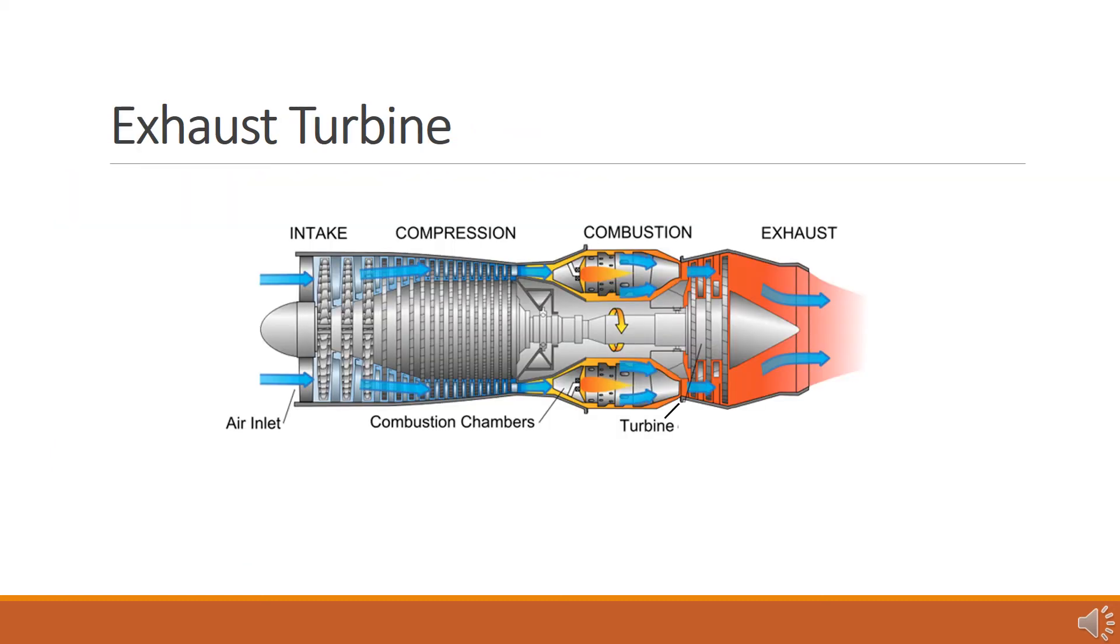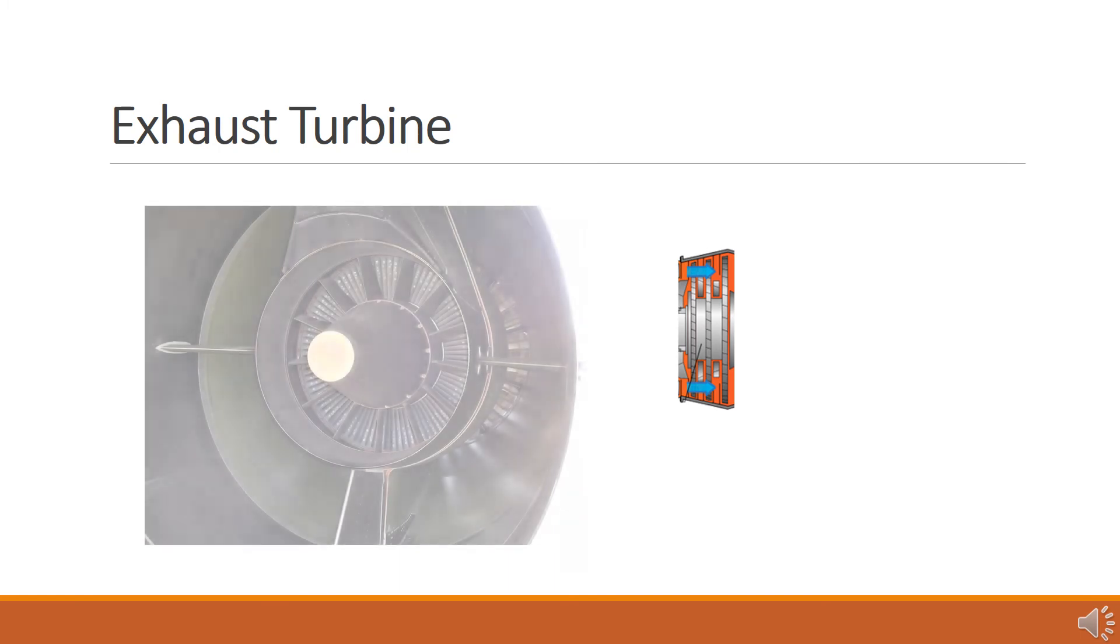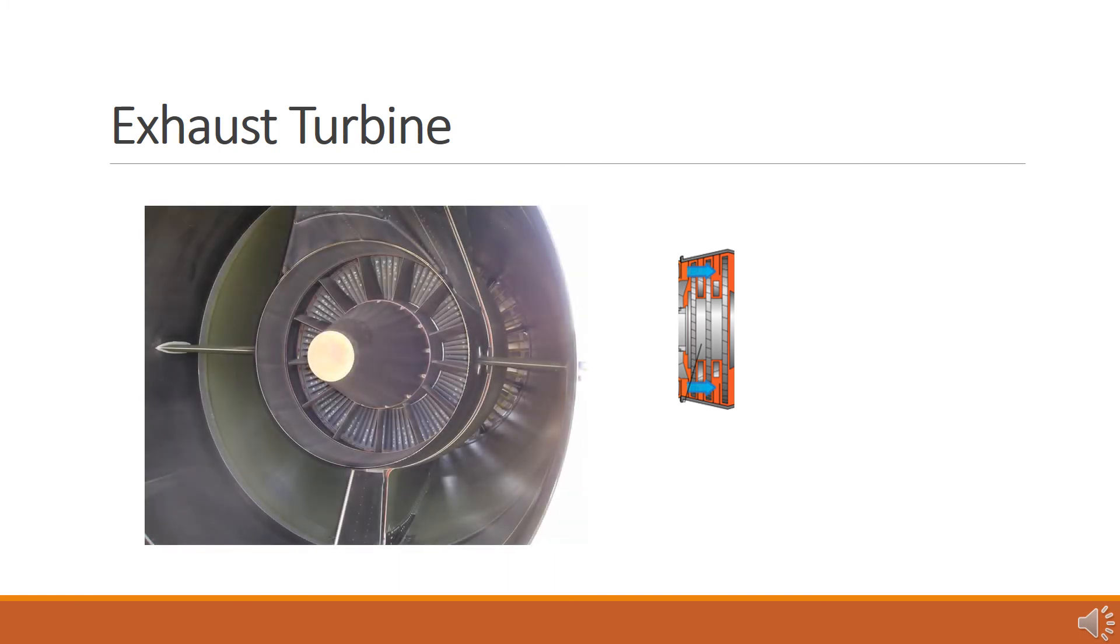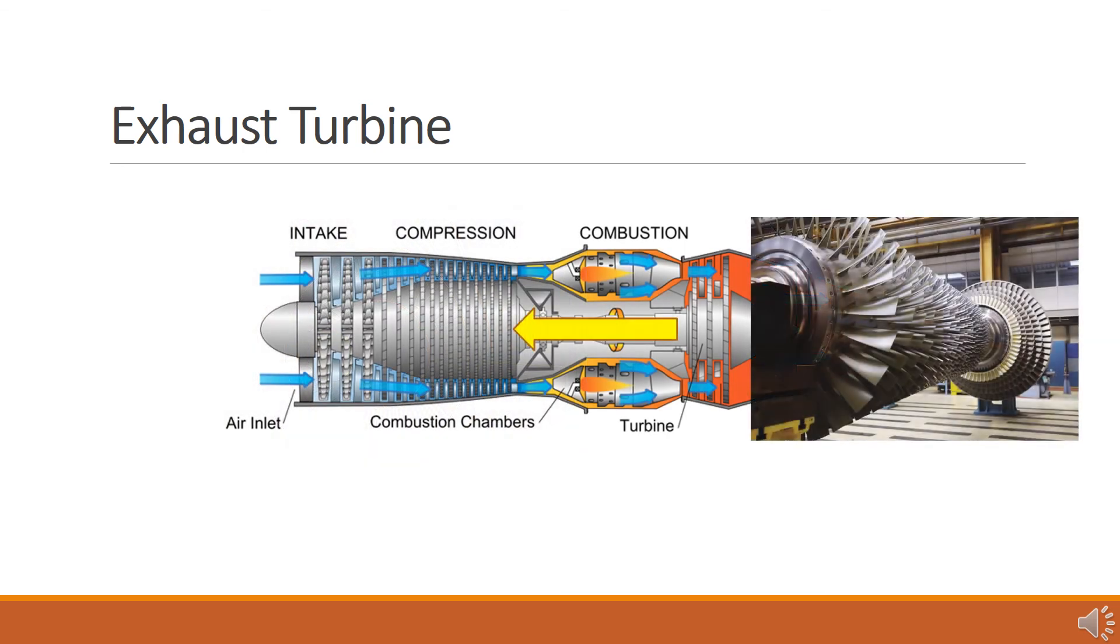Immediately behind the combustion chamber is the turbine. The turbine is a series of bladed discs located behind the combustor in the pathway of the exhaust gases that acts like a windmill. The turbine extracts energy from the hot gases leaving the combustor which forces the turbine wheels to spin. The turbine is connected by a shaft to the compressor. Some of the energy collected by the turbine is transmitted through the shaft to drive the compressor.